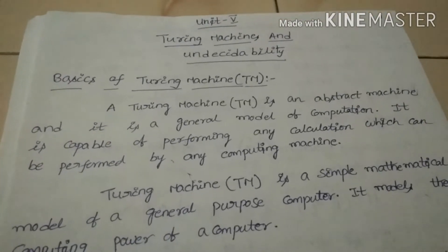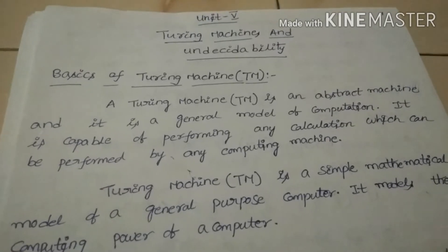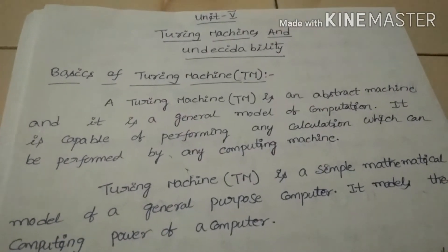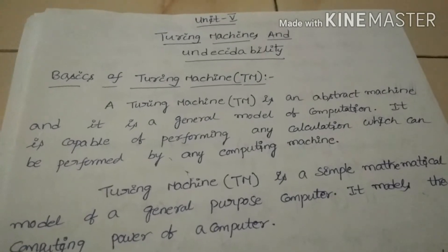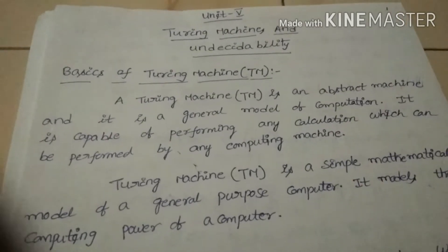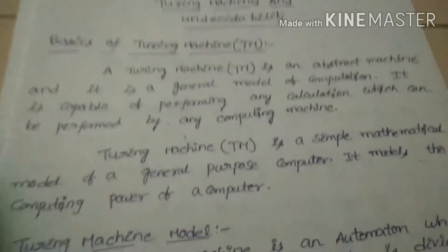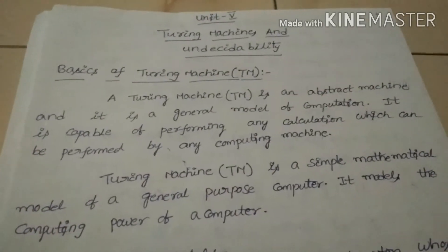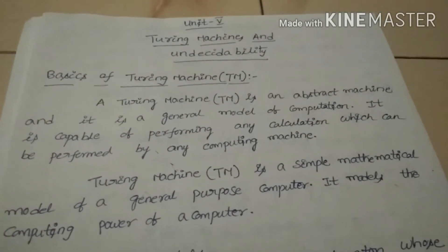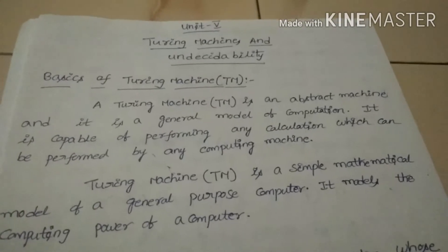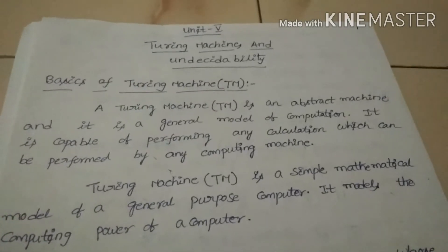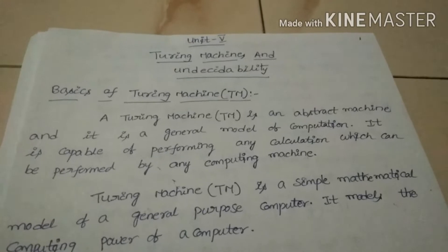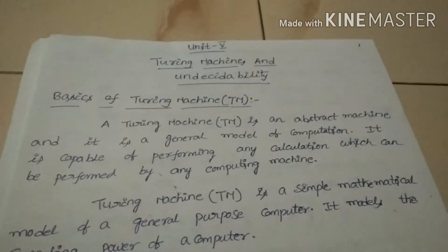What is meant by a Turing machine? The Turing machine is an abstract machine. It is a general model of computation. It is capable of performing any calculation which can be performed by any computing machine. It is considered that the Turing machine is the foundation of digital computers.